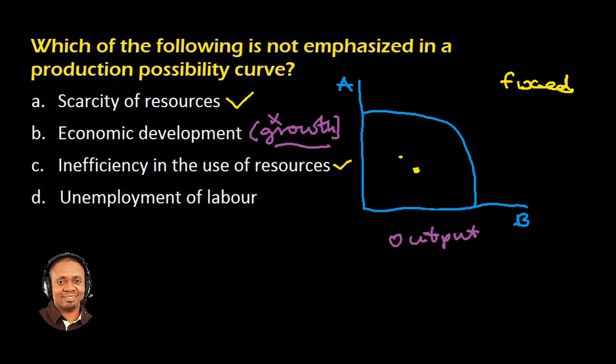Lastly is the unemployment of labour. Unemployment of labour also shows that there is inefficiency. There is not enough usage of the available labour. So this also is signified somewhere within the production possibility curve. This is emphasized in the PPC curve. Option B is the right answer because economic development is not emphasized in the PPC.